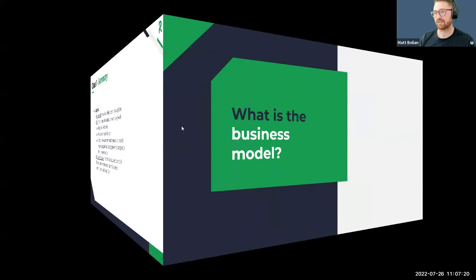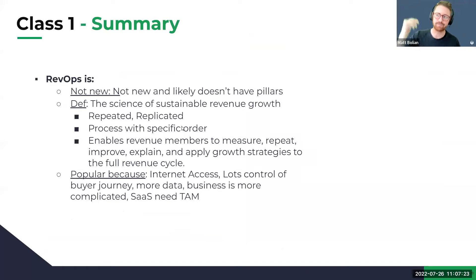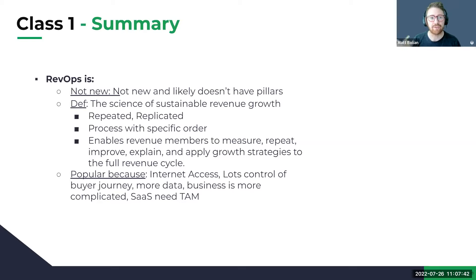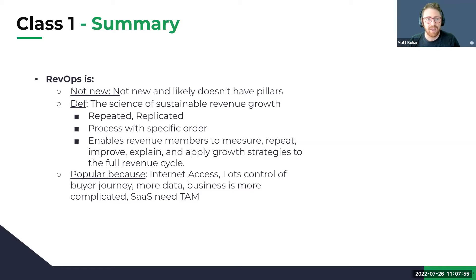Summary from class one: RevOps is not new and it likely doesn't have pillars. People have been doing it for a long time — it's just how important it is. The definition we've talked about: revenue operations is the science of sustainable revenue growth. It's repeatable, can be replicated, has a process with a specific order that enables us to measure, repeat, improve, explain, and apply growth strategies in order of priority. It's become more popular because of internet access, loss of buyer journey, a bunch more data, business is more complicated, and SaaS people need revenue operations professionals.